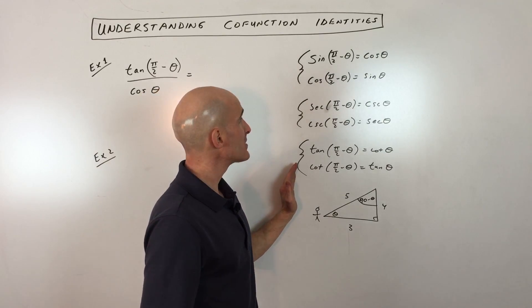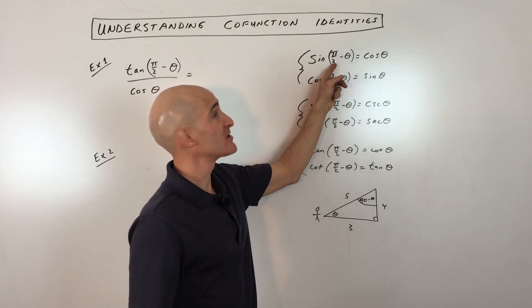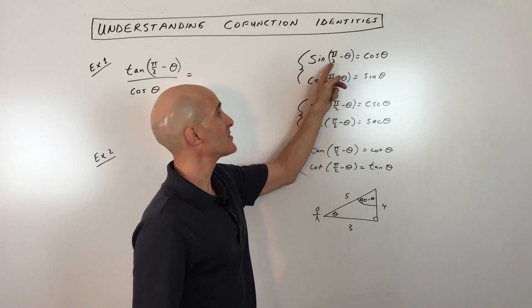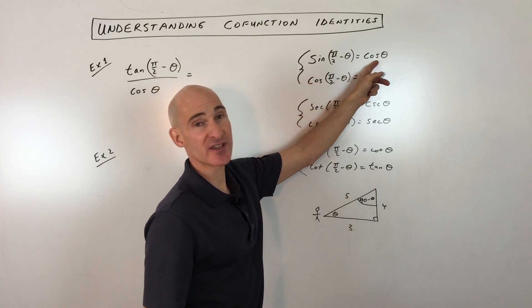I've written down the identities here for us, and you can see that sine of pi over 2, which is like 90 degrees, this is in radians, but pi over 2 is 90, so cosine of 90 minus theta equals sine of theta, and sine of 90 minus theta equals cosine theta.